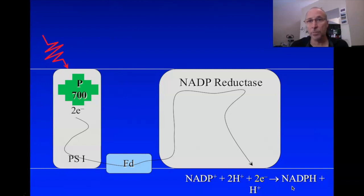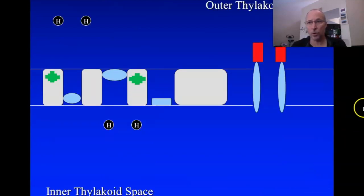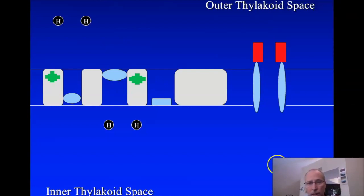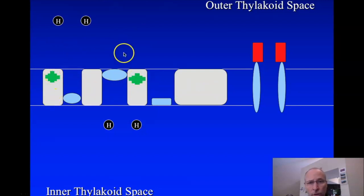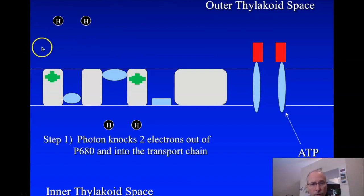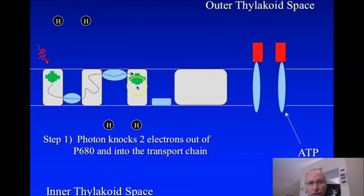That's our first compound made to harvest energy in the light-dependent reactions. The other compound is ATP. ATP is made in a way you've already seen — almost identical to what we saw in the mitochondrion. Looking at this thylakoid membrane, here's P680 (photosystem II) and here's P700 (photosystem I). Photons come in, oxidize P680, electrons move down the electron transport chain and end up on P700, and then eventually end up in NADPH.